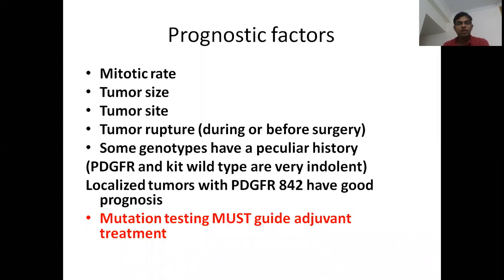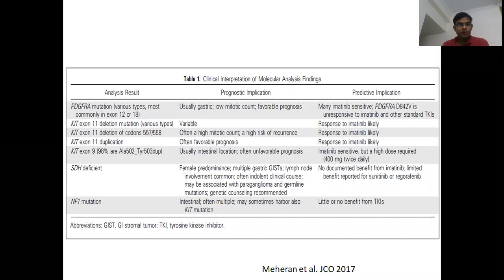If it is PDGFRA D842V in localized form, patients have good prognosis. However, if it is metastatic, the median progression-free survival is only 2.8 months. Even when we know it is CKIT exon-11 mutation, we must check if it is a duplication — because duplication offers favorable prognosis. If it is localized to codons 557 and 558, prognosis might not be great. KIT exon-9 carries unfavorable prognosis. SDH and NF1 will be discussed further.